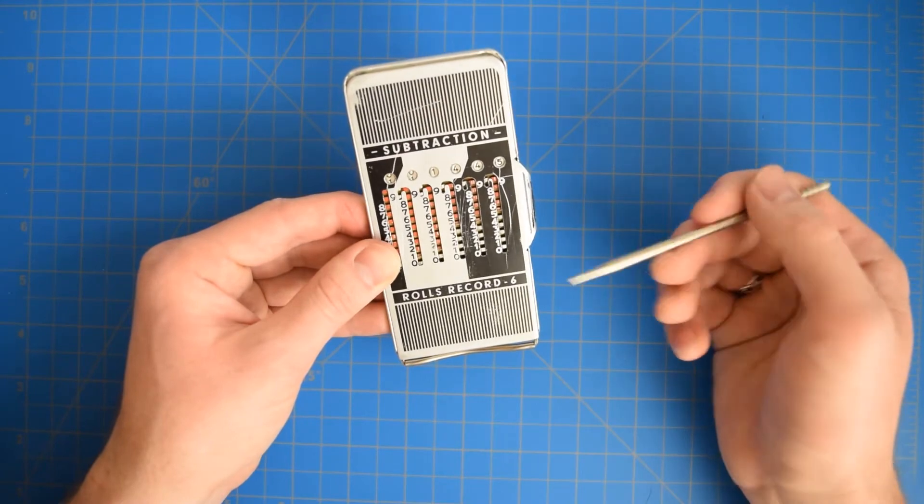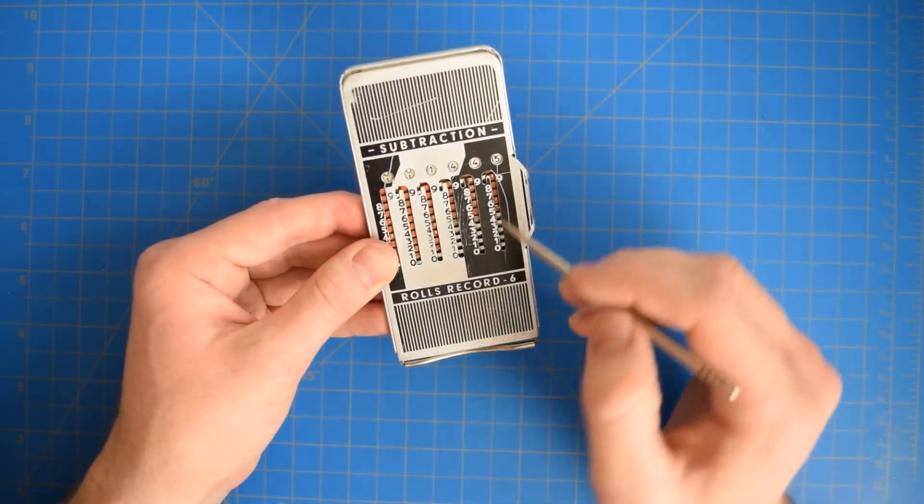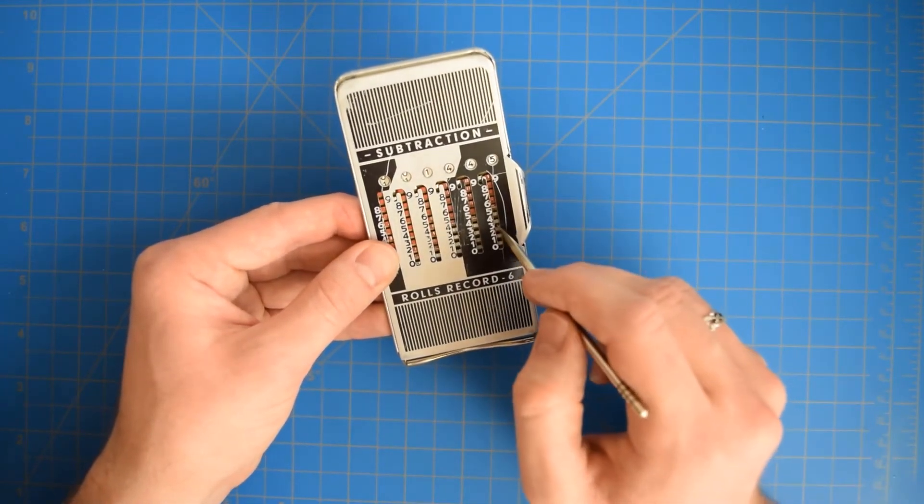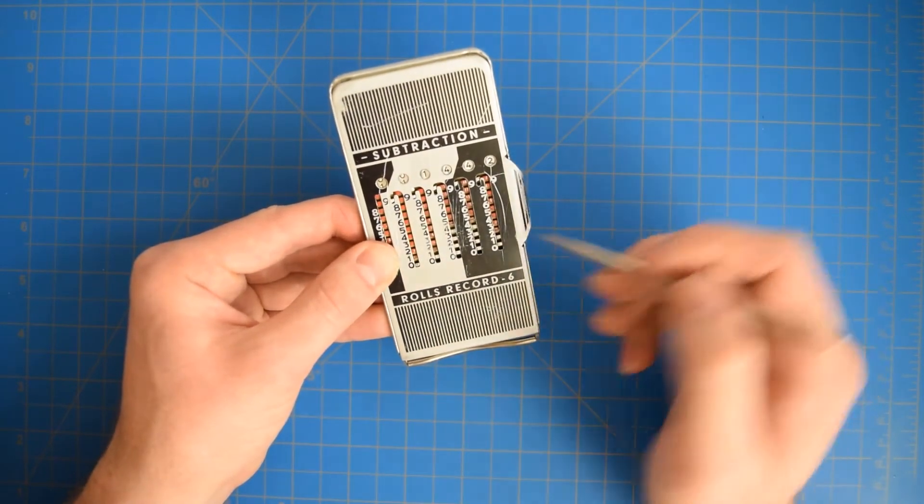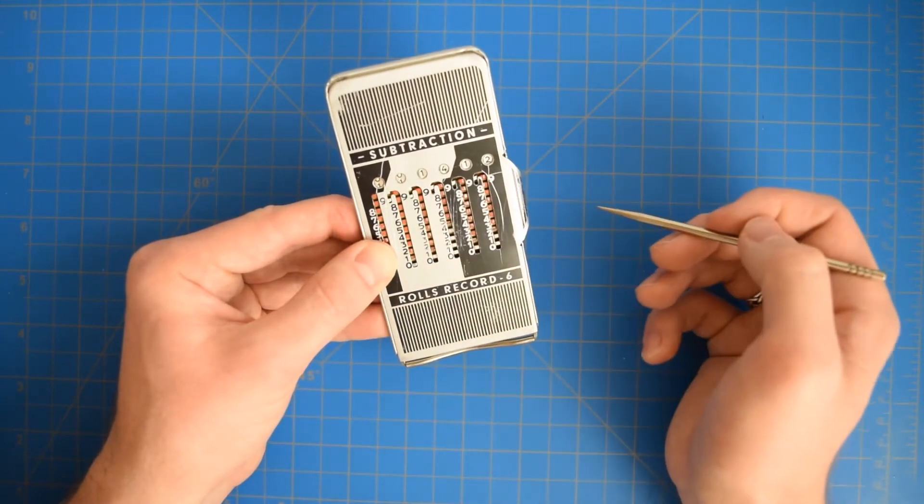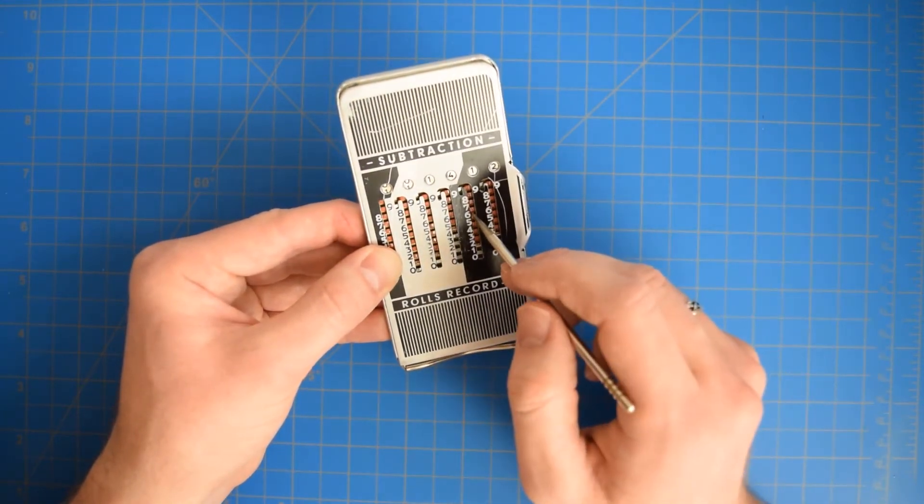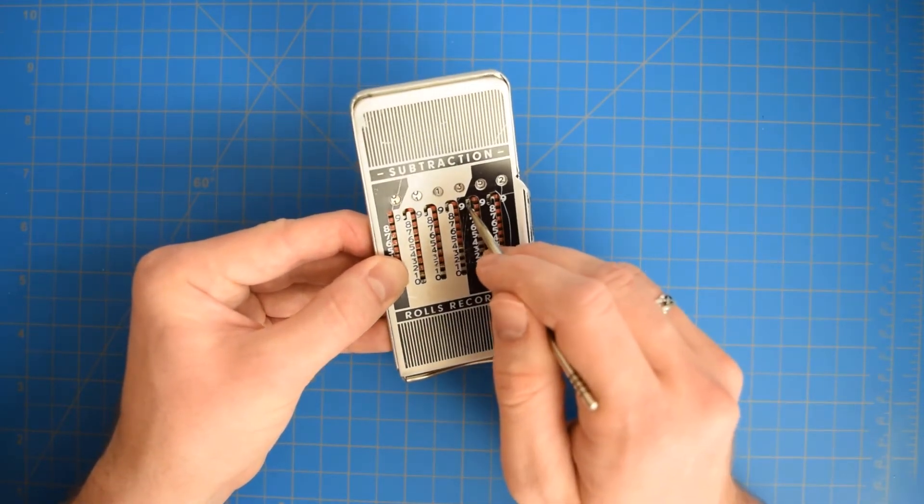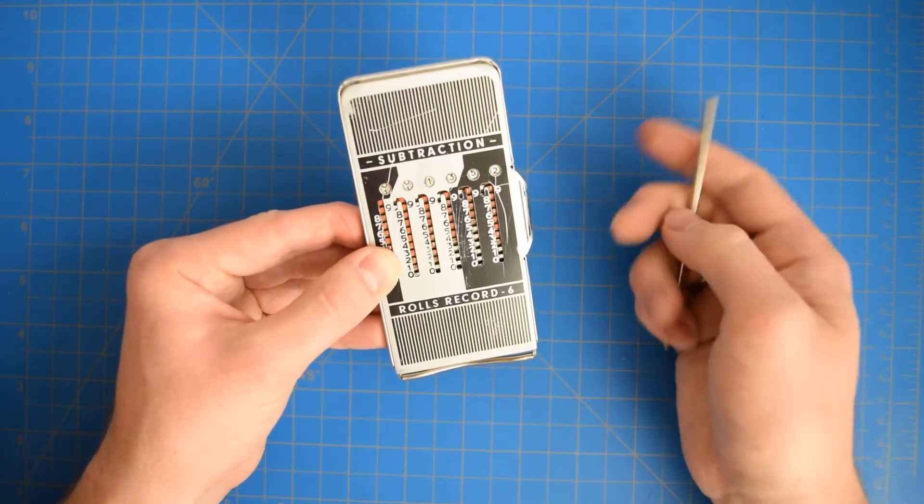And we simply perform the reverse operations here. So instead of adding 3, this will subtract 3. Same thing here. Instead of adding 30, this will subtract 30 from our number. And if we want to subtract 60, we do this. And there we go. We have subtracted 60 from our number.